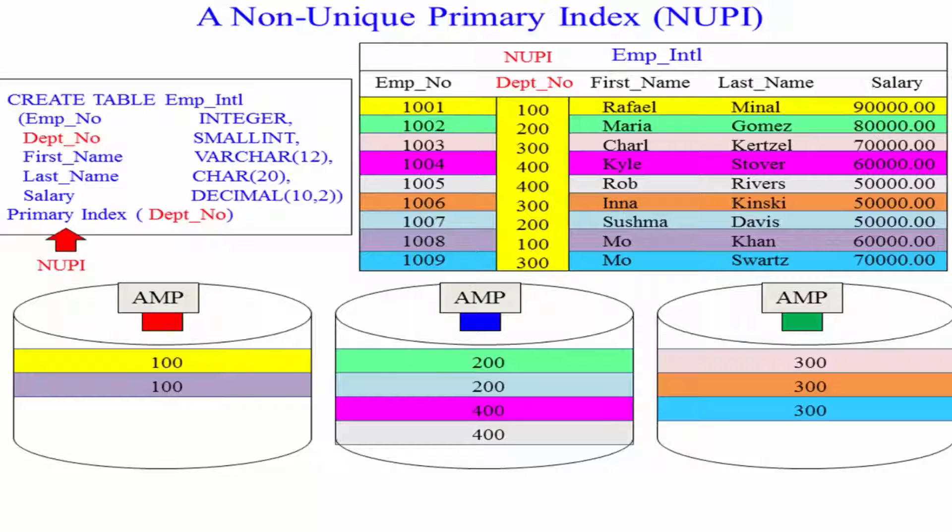Because Teradata uses a math formula to distribute the data. One math formula. So if you can see, all of the people in Department 100 went to AMP 1. All of the 300s are together, all the 200s together.